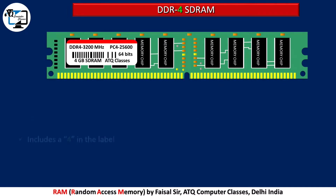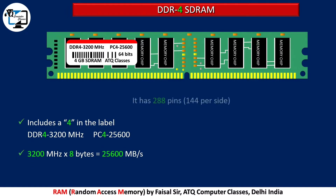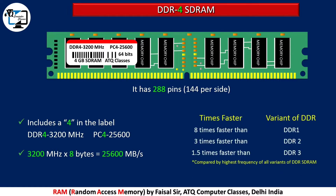DDR4 includes a 4 in the label. The maximum speed of DDR4 is 25,600 megabytes per second. It has 288 pins, 144 pins per side. It is 8 times faster than DDR1, 3 times faster than DDR2, and 1.5 times faster than DDR3.